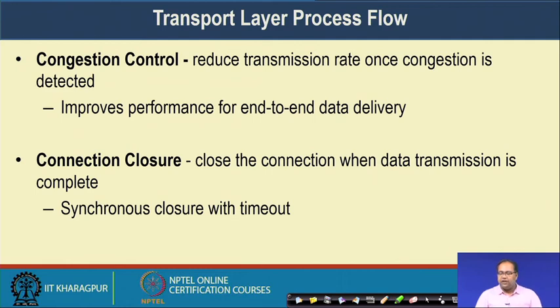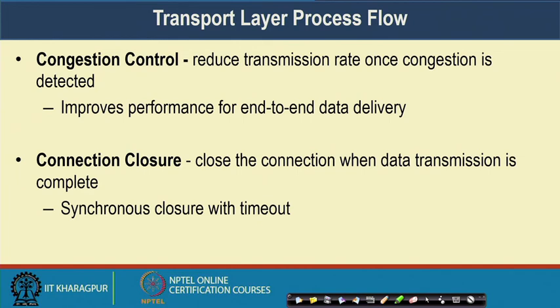Congestion control reduces transmission rate once congestion is detected and improves end-to-end data delivery performance. Dynamically, based on this rate, data is sent, acknowledged, and the process proceeds. Once data transmission is complete, the connection closure primitive is executed. Although asynchronous closure is ideal, it is not implementable in a distributed system with an unreliable channel, so we use synchronous closure with timeout. In the next class we will study the Transmission Control Protocol—TCP—in detail, which carries around 80 percent of global internet traffic.